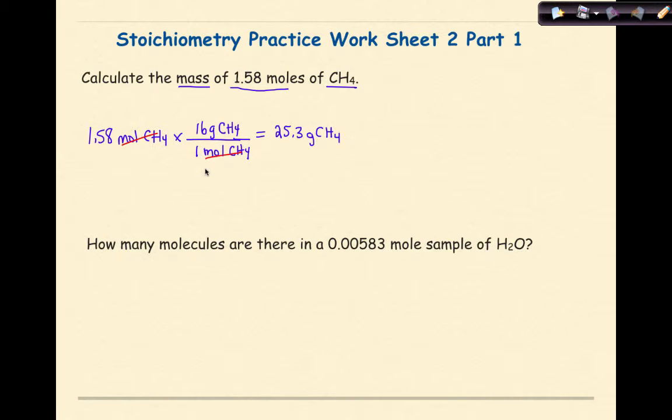Now one thing that I want to pay attention to here is number of significant figures. I can look at my given, the 1.58, and see that there are 3 significant figures here. Which means my ending answer should also have 3 significant figures, which I do see right here. The 2, the 5, and the 3 are all significant. So I have 3 significant figures here.